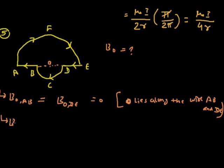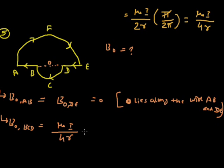Second, B at O due to wire BCD. Now, the current is flowing and by using the right-hand thumb rule we can find that the direction of the magnetic field will be downward, meaning into the plane. The value will be simply μ₀I / 4R, and it is downward. Let this radius be R2, and the radius of the upper circle is R1.